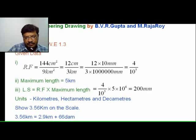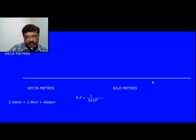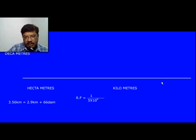Now observe the procedure to draw this. Draw a line of length 200 mm and divide it into equal parts. If you try 4 parts, each part is 1 km, giving only 4 km — but the maximum length required is 5 km, so that condition is not satisfied. Dividing into 5 parts gives each part as 1 km and a total length of 5 km, satisfying the maximum length condition. So go for 5 parts.